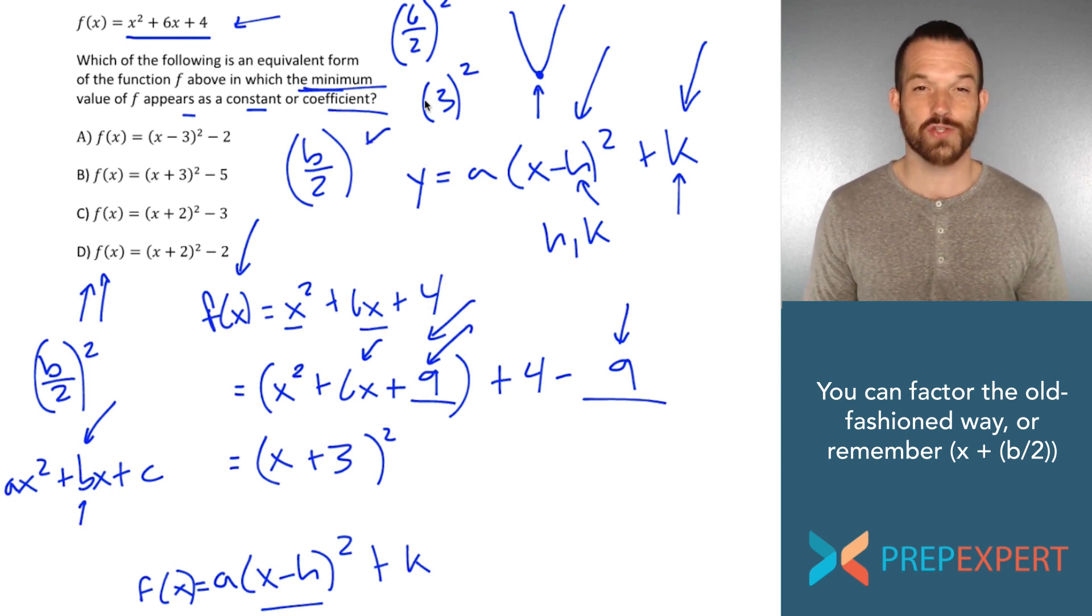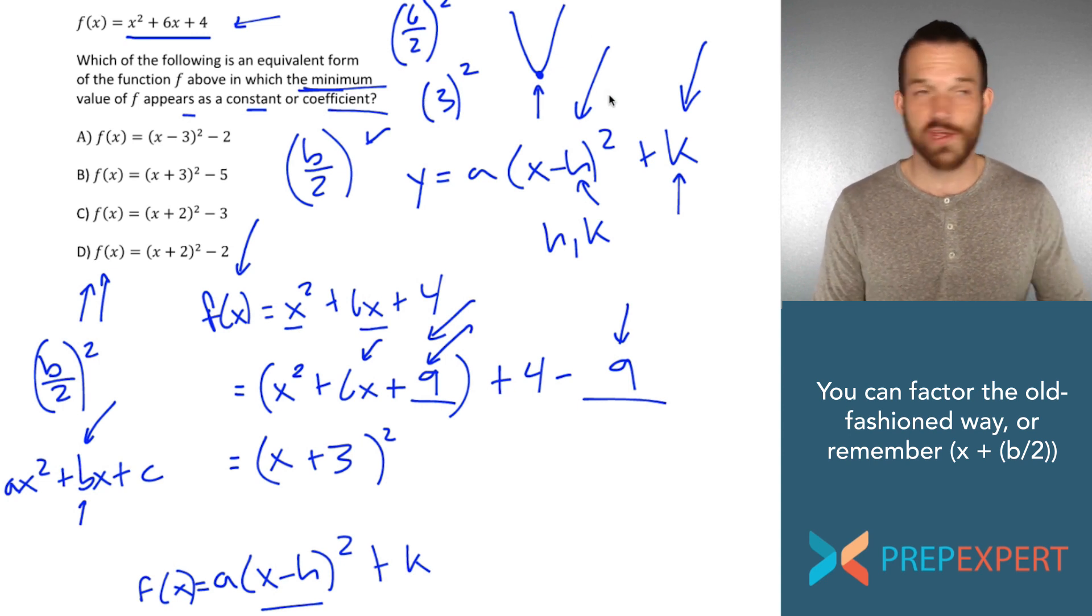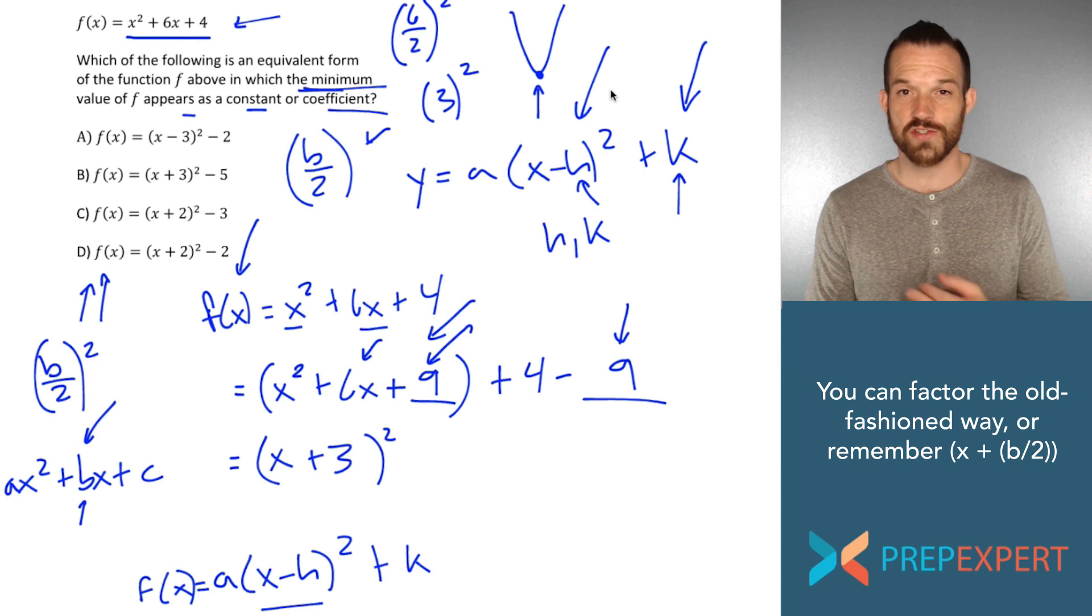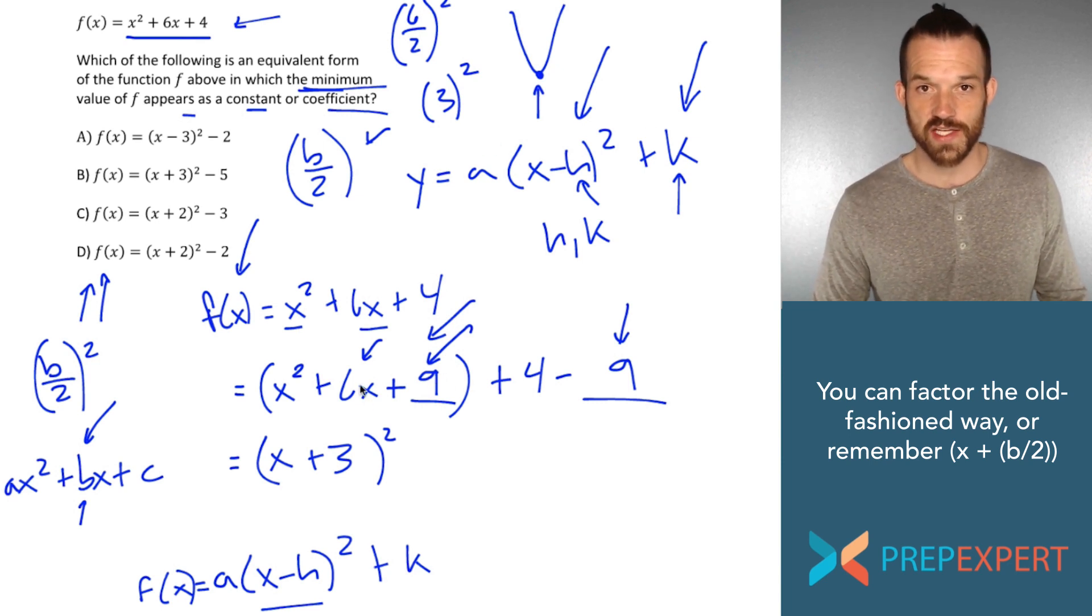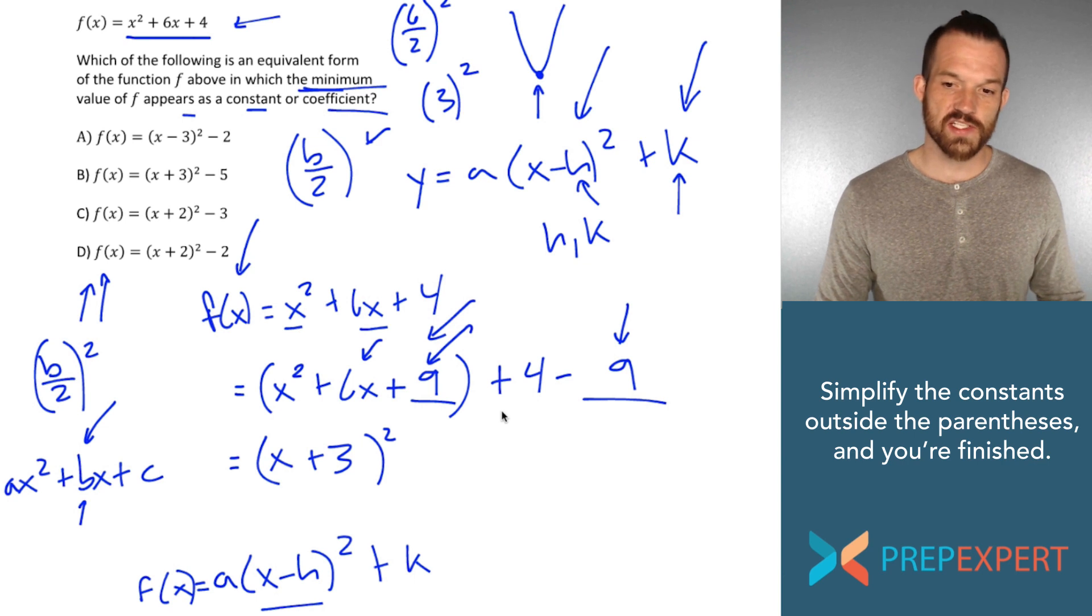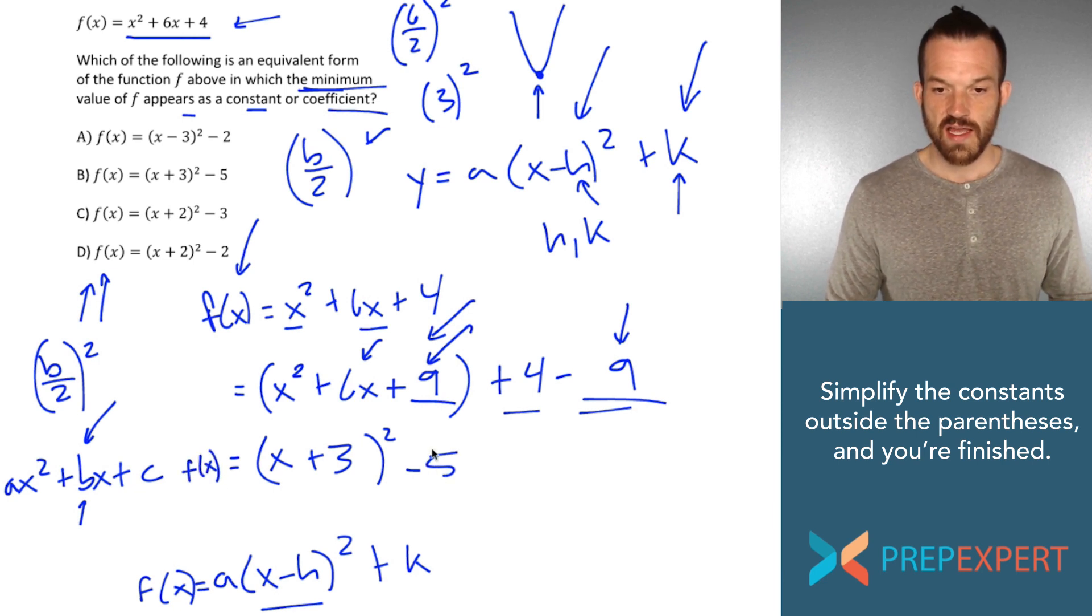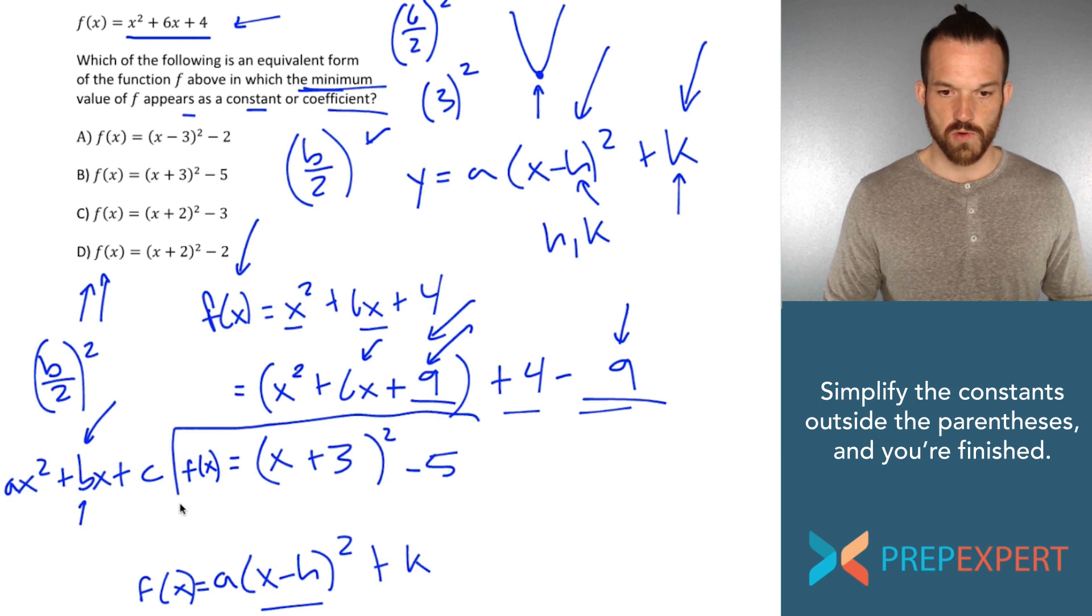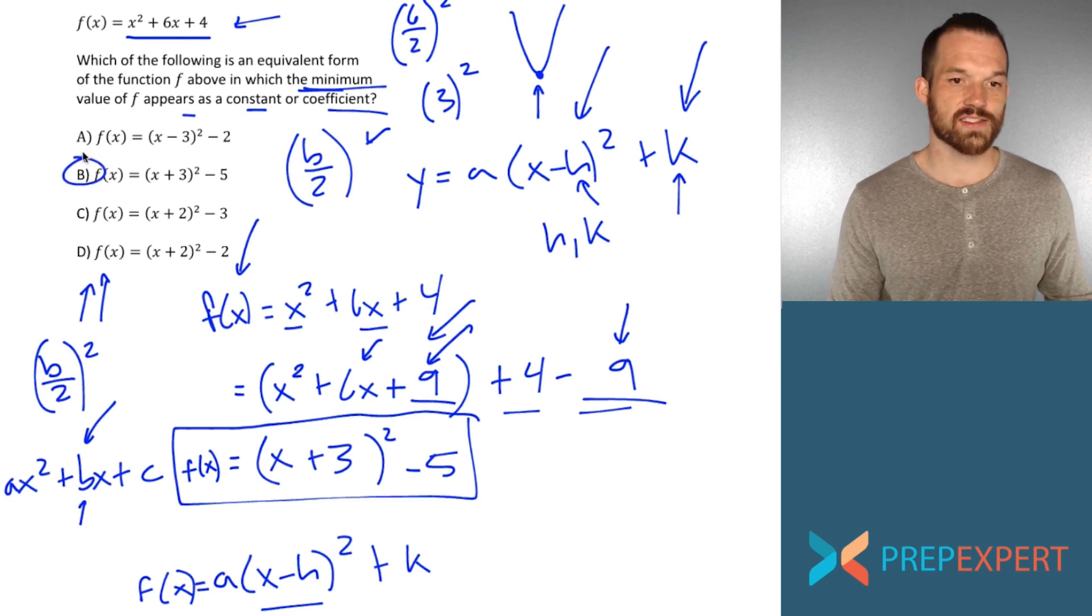But if you don't trust yourself to remember that, if you don't trust yourself to remember that the second term of the binomial that I factor it into will always be equal to b over two, you can just factor this quadratic the same way you factor any quadratic, which is just look for two factors of the c term that add up to the b term. So what are two factors of nine that add up to six? Three and three. So you can factor it the old fashioned way as well. Awesome. Now that I've factored what's inside the parentheses, I just add together the terms outside the parentheses four and negative nine, and I get negative five. So it looks like the final form of my quadratic is f(x) equals x plus three quantity squared minus five. And if we look, that is in fact answer choice b.